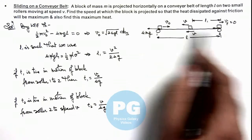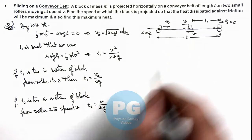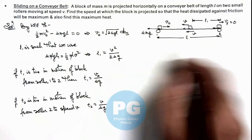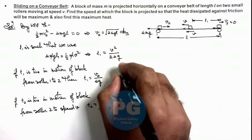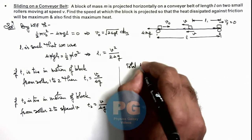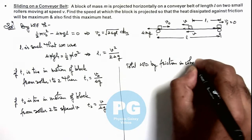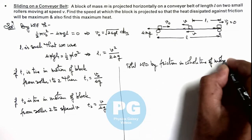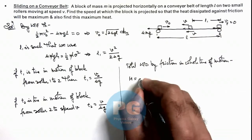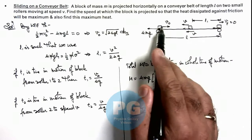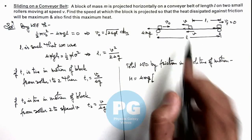Now that we have the times, we can calculate the distance travelled by the belt in time t₁, which is v·t₁, and in the return path the distance travelled by the belt is v·t₂. So we can calculate the total work done by friction over the whole time of motion. In the first path, the friction is μmg multiplied by the distance travelled by the block with respect to the belt. Since the belt is moving toward the right with speed v and the block has travelled a distance l, this relative displacement is l plus v·t₁.